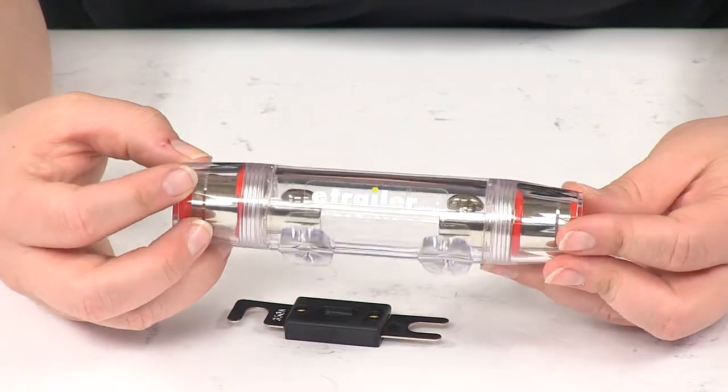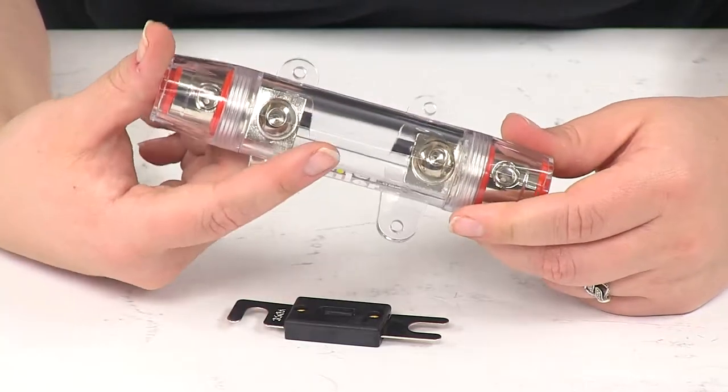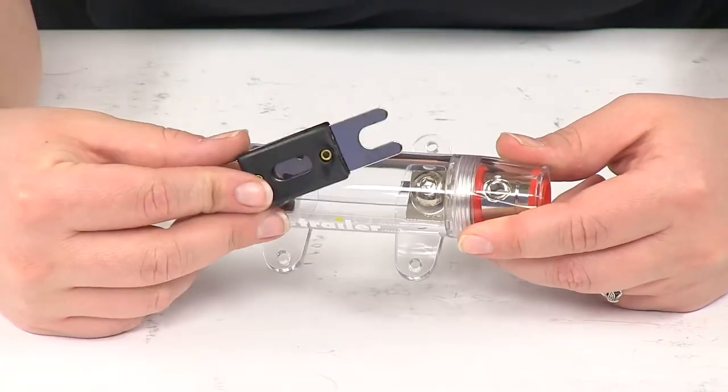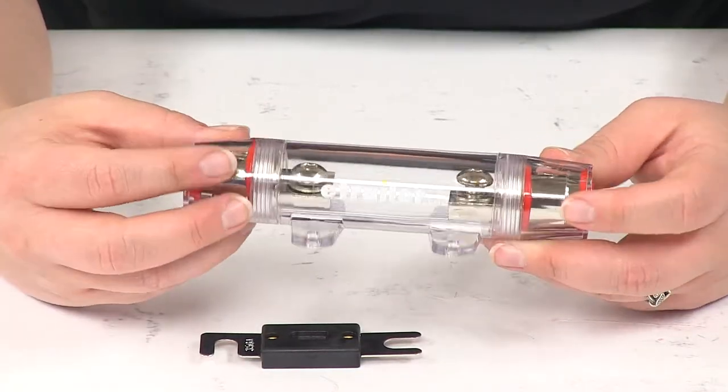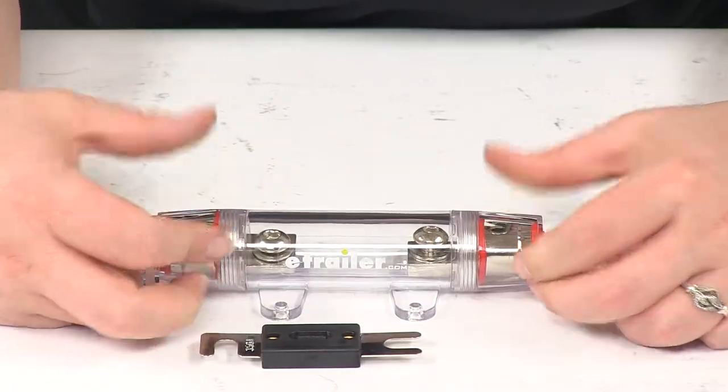That's also a nice thing about our fuse holder itself is that it is clear so once this is blown inside the fuse holder, we'll be able to tell without having to open it up and check it out. You can see it immediately just by looking at it.